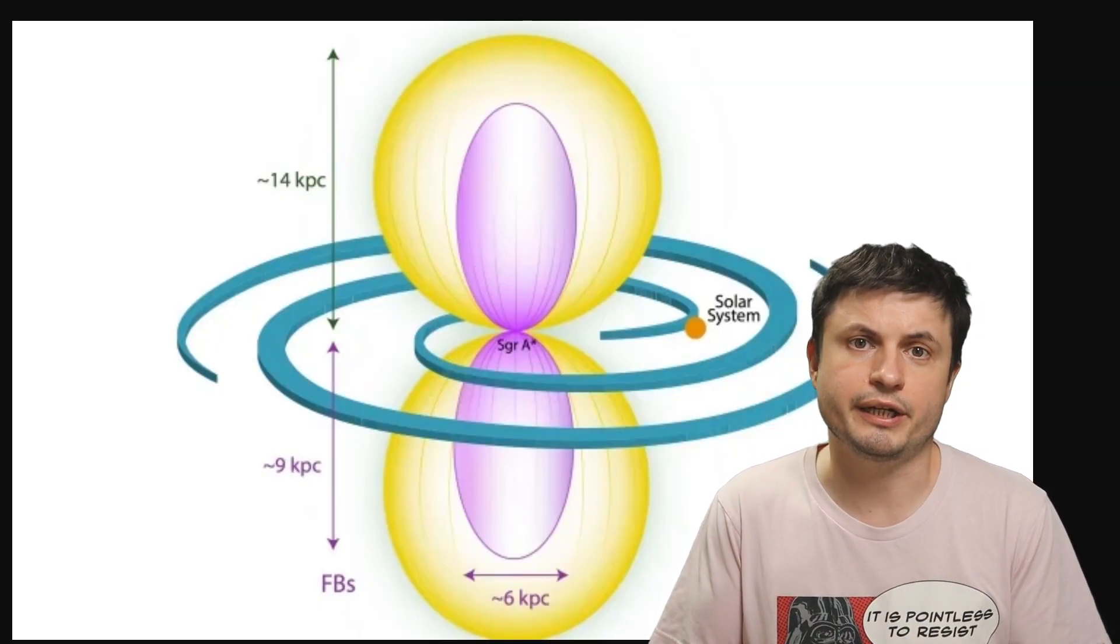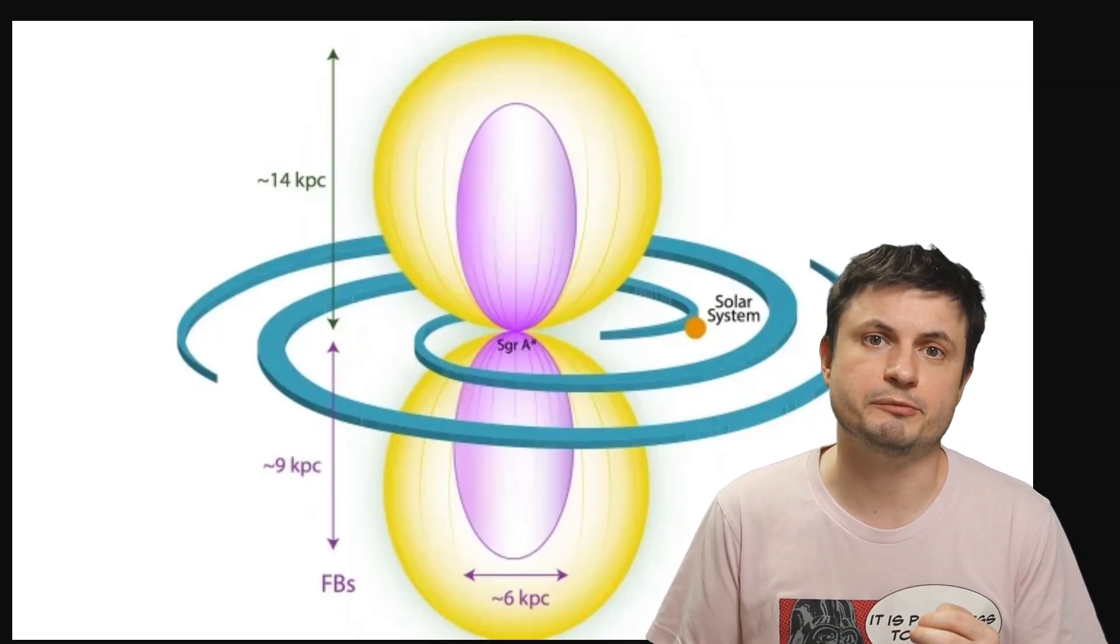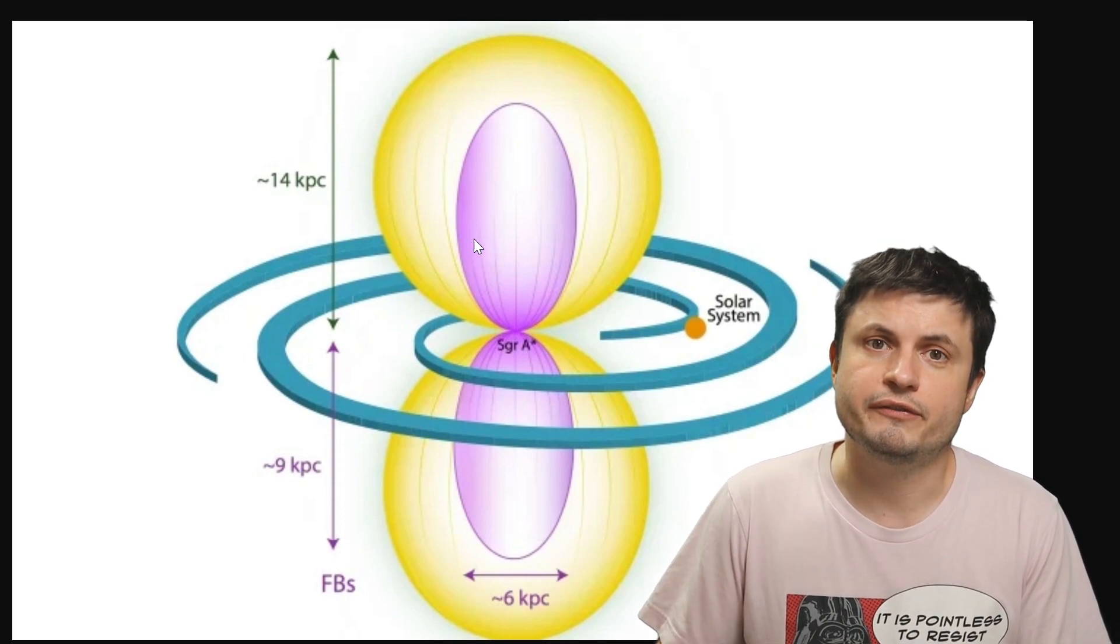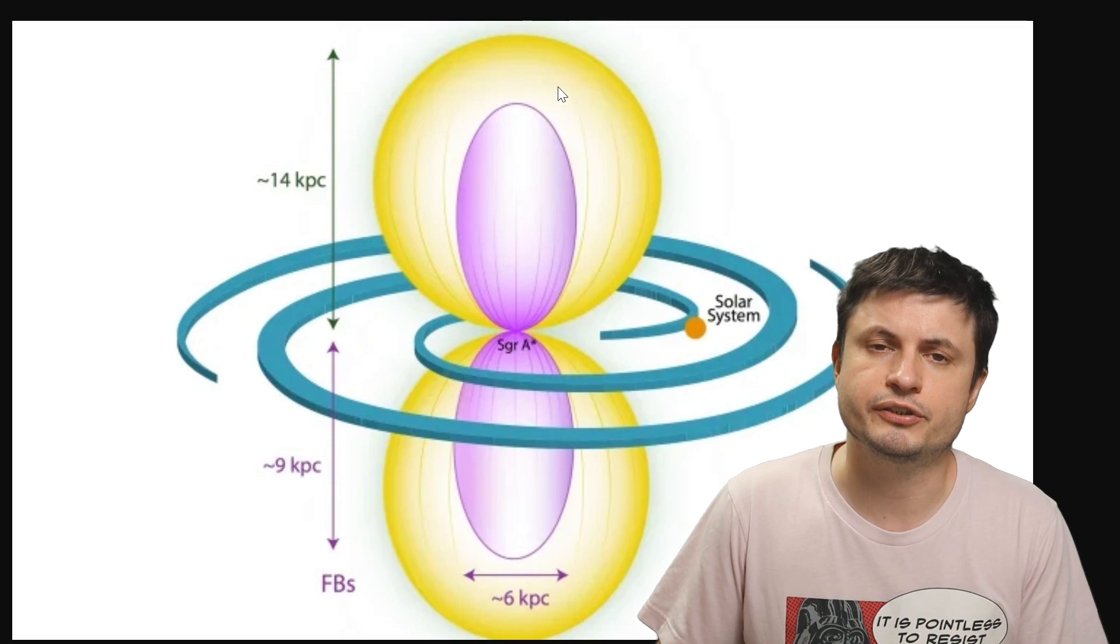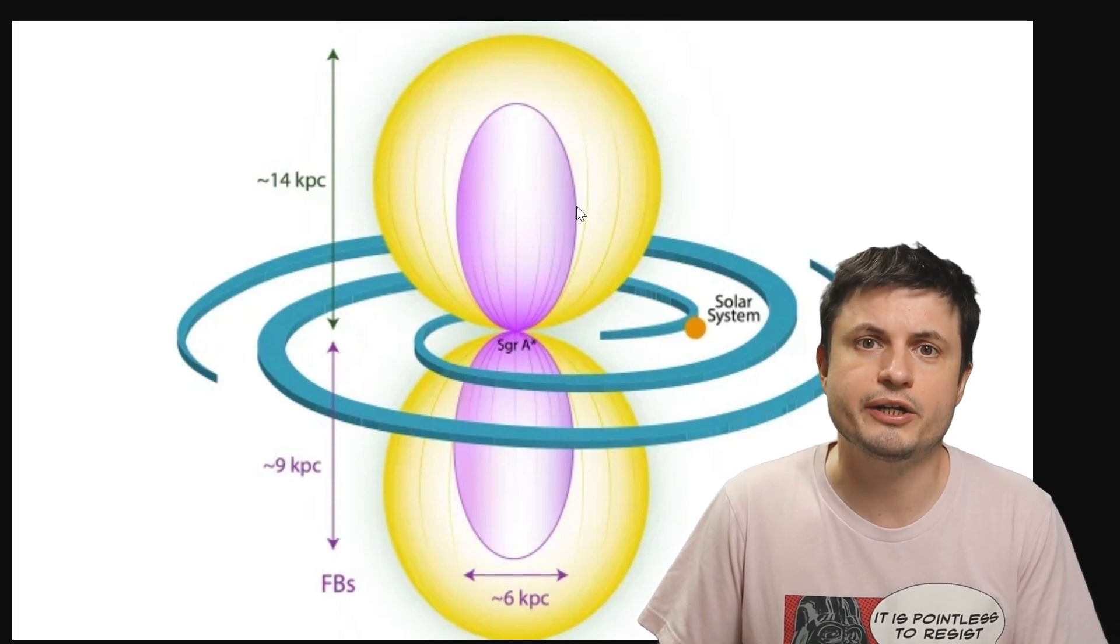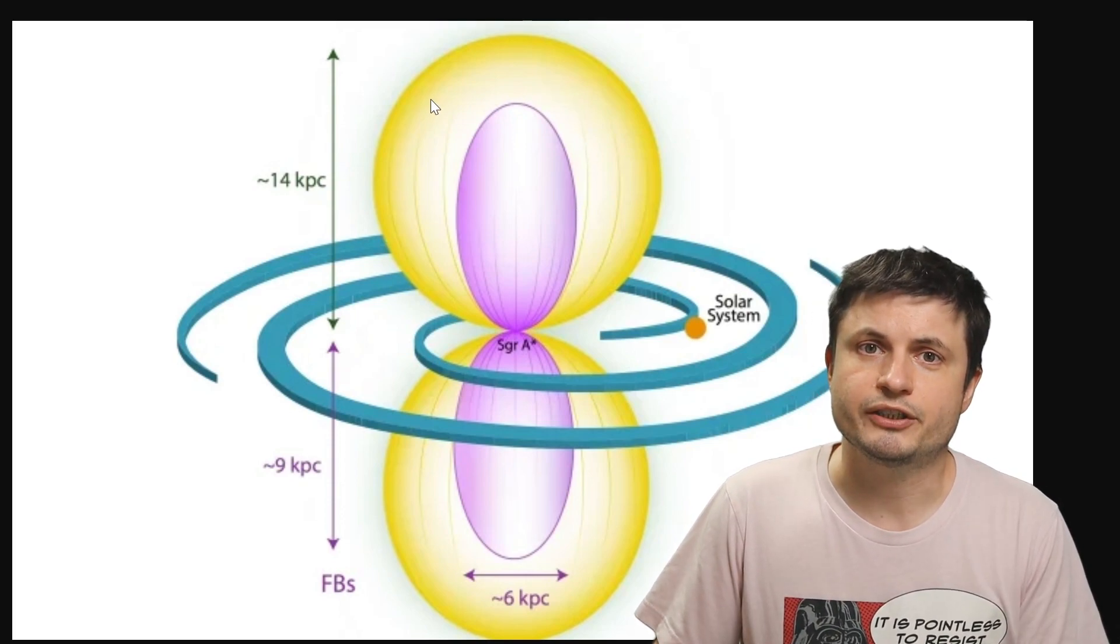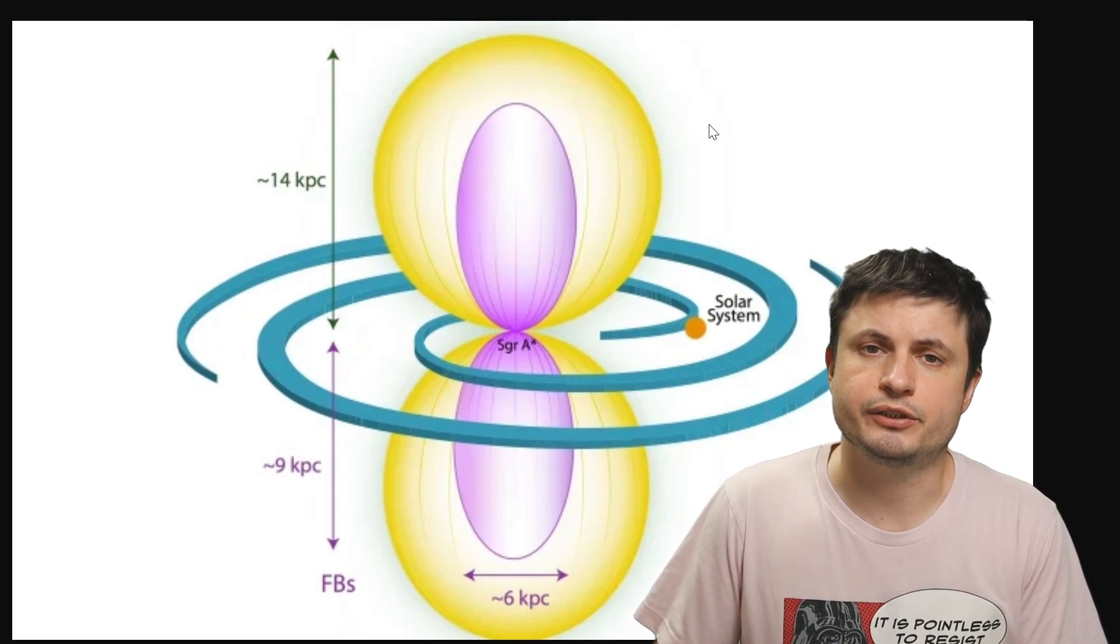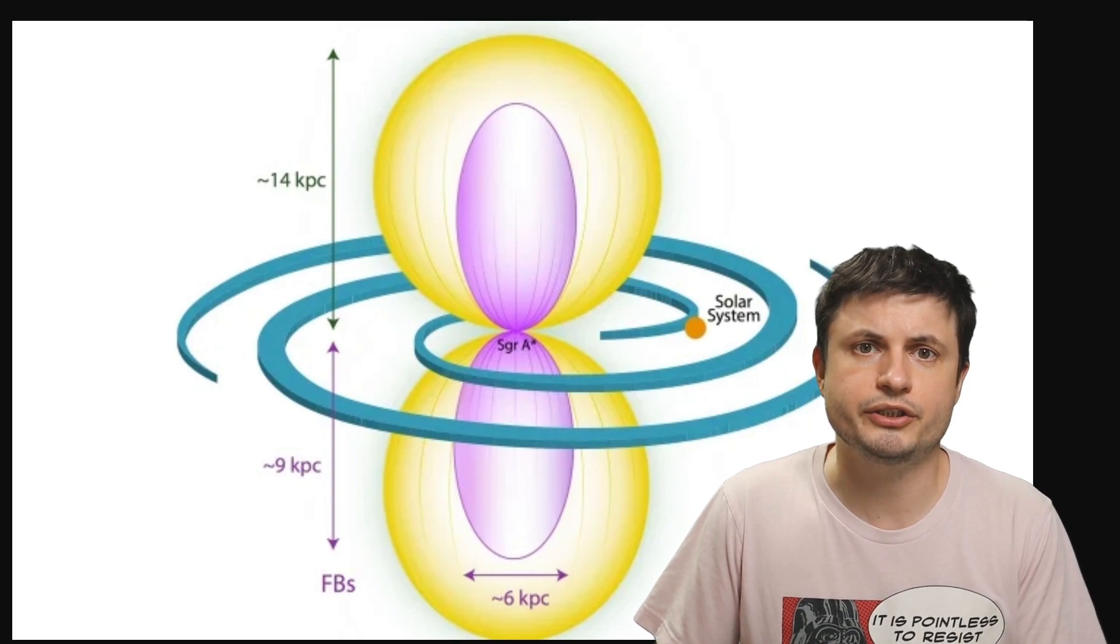But unlike the shape similarity there are also important differences between the Fermi and the new Erosita bubbles. Obvious differences of course are in frequencies. So these are gamma rays. They're much higher in energy. Whereas these are X-rays. Overall slightly lower in energy.